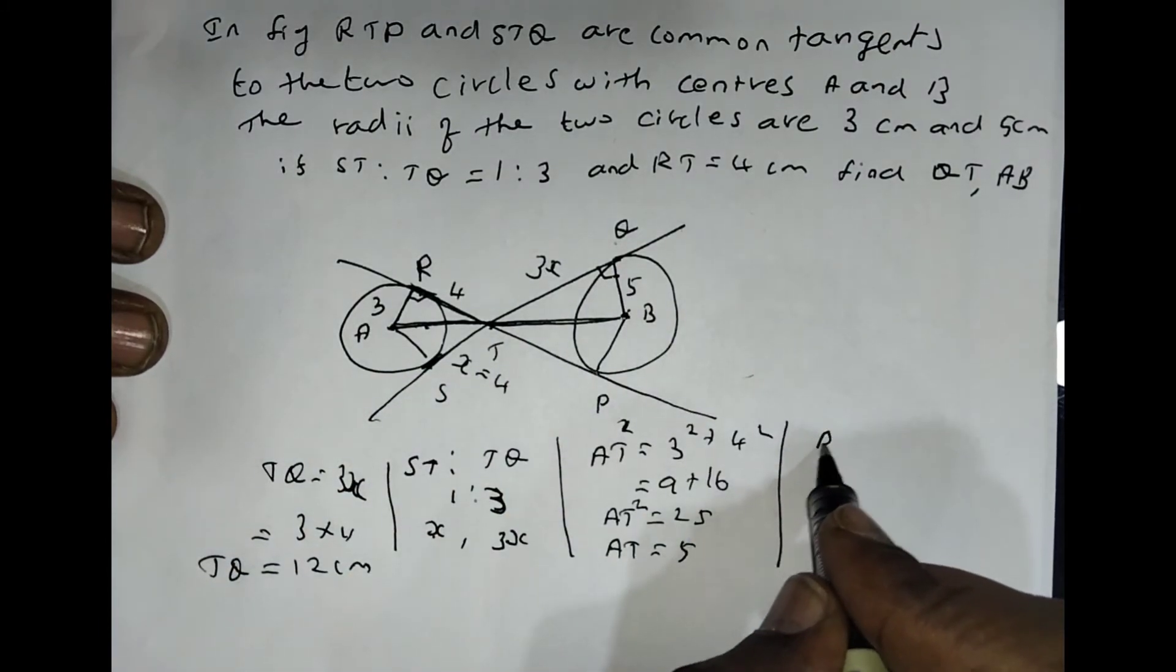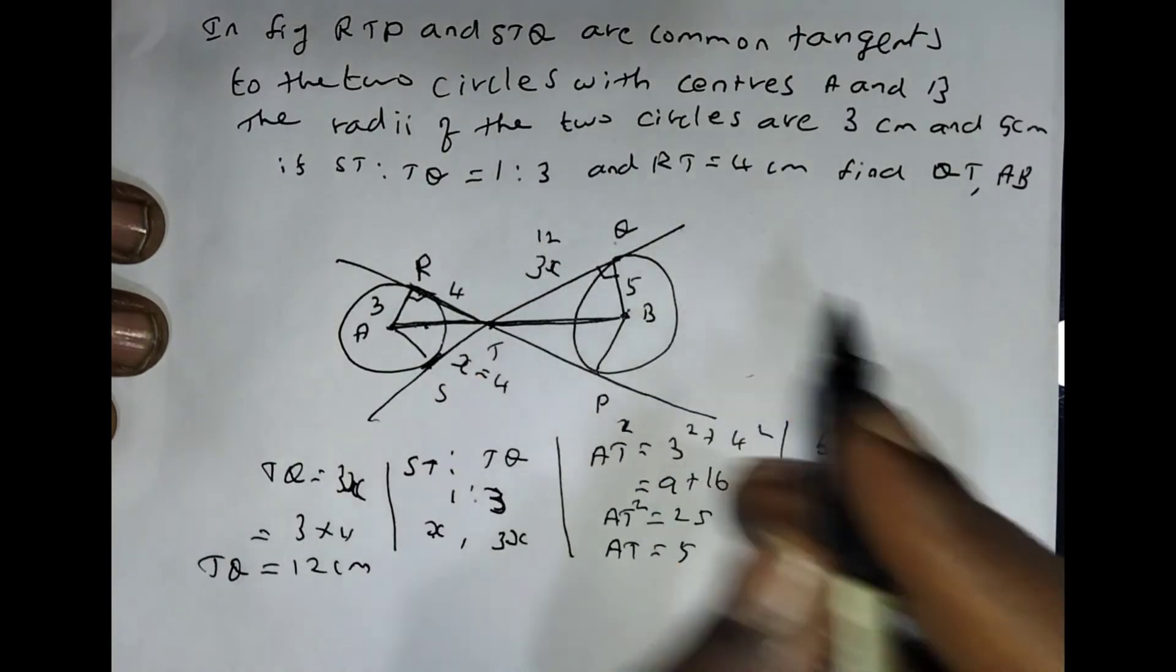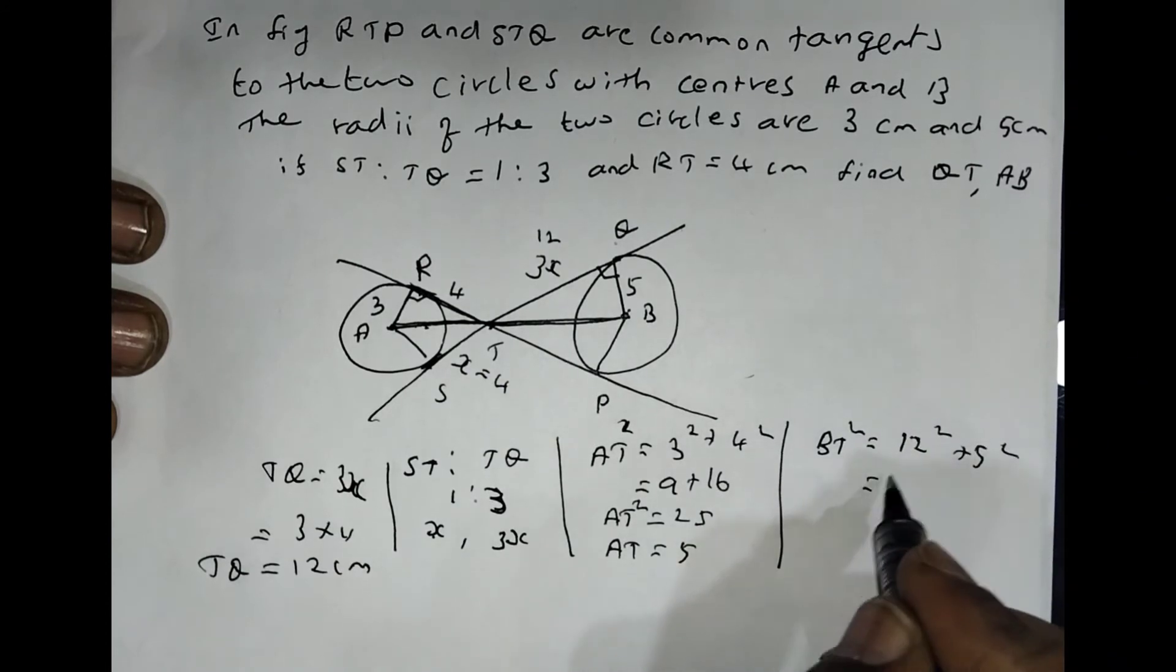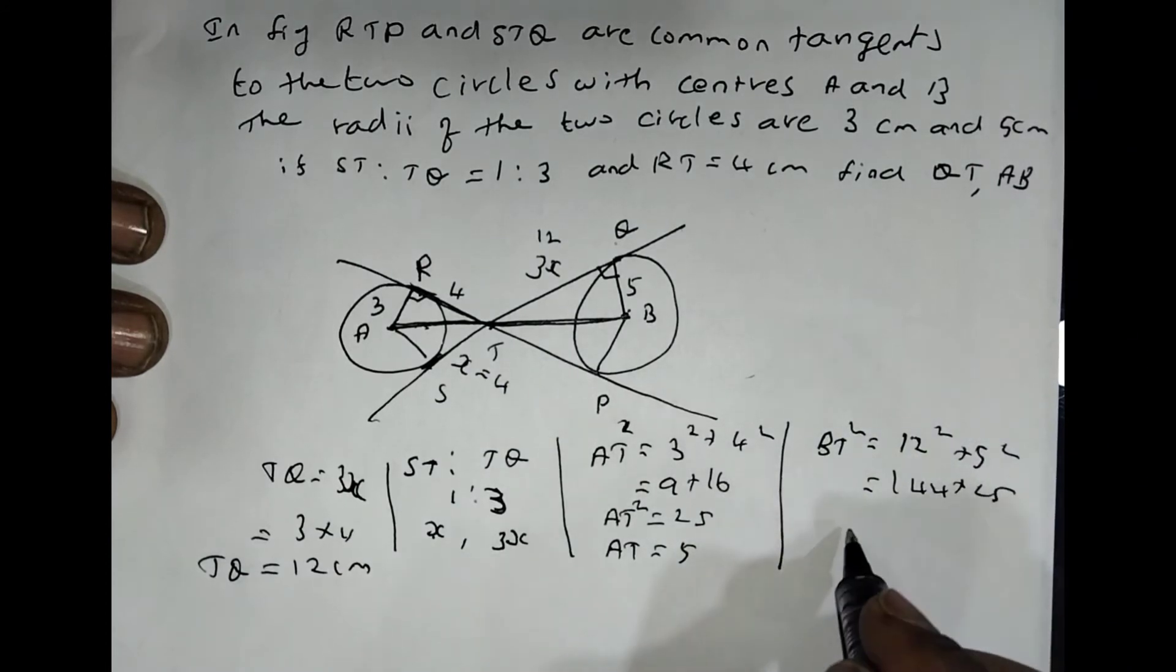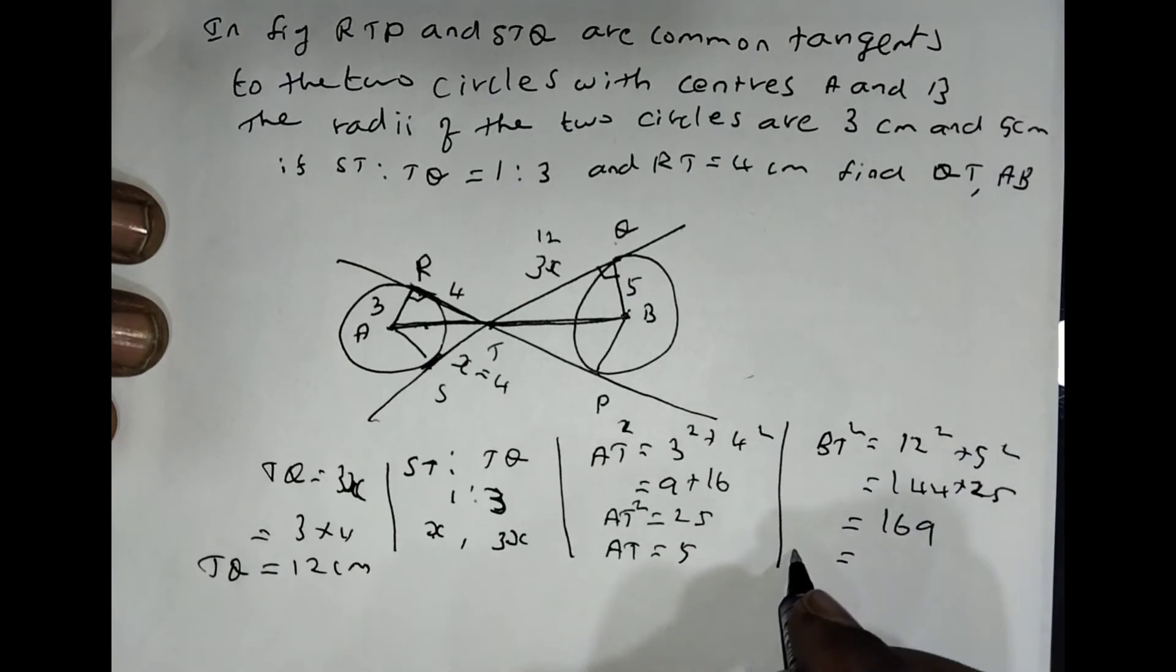So here BD squared equals, here 3X value is to become 12, so 12 squared plus 5 squared. BD squared is 144 plus 25, which is 169.